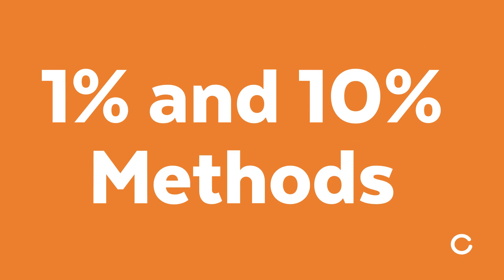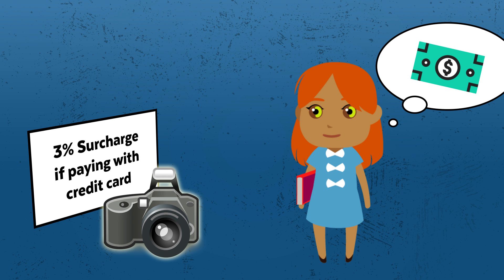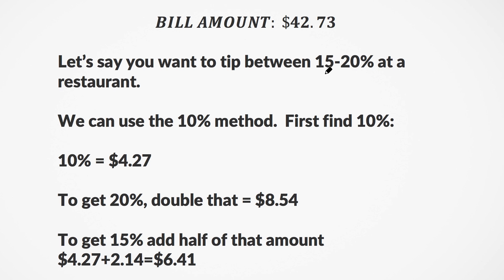My next tip is one I really like because it's a great real-world tip — I use this all the time in my real life. It's the 1% and the 10% methods. These are percent mental math tricks. If you're ever shopping at Macy's and want to figure out 20%, 30%, or 40% off, you can use the 10% method. If there's a sign saying credit cards incur a 3% surcharge and you want to figure out how much that is, you can use the 1% method. So let's say we go to a restaurant and get a bill of $42.73, and we want to tip between 15 and 20%.